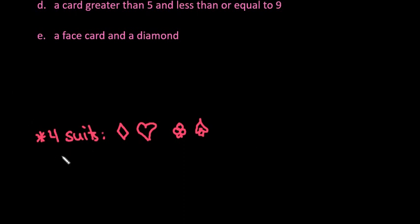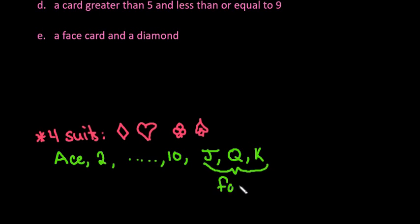There are 13 cards starting with an ace, which counts as a 1, and a 2 all the way up through a 10. And then you have the face cards: a jack, a queen, and a king. So these are considered face cards because they have a face on them. So a lot of you probably already know the makeup of cards, but just in case you don't.